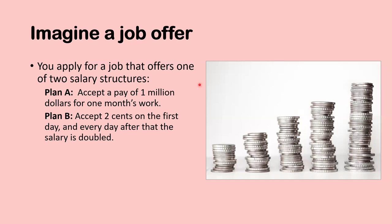Imagine a job offer where you choose between two salary structures for a month of work. Plan A pays you a lump sum of $1 million. Plan B gives you two cents on the first day, and every day after, the salary is doubled — so day one is $0.02, day two is $0.04, day three is $0.08, then $0.16, and so on.